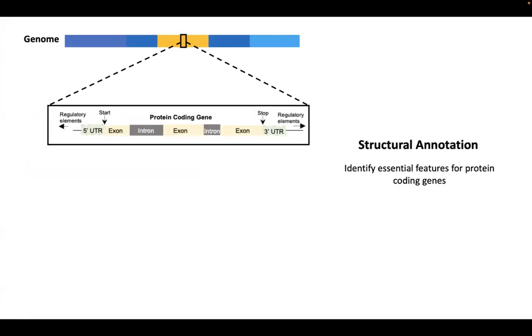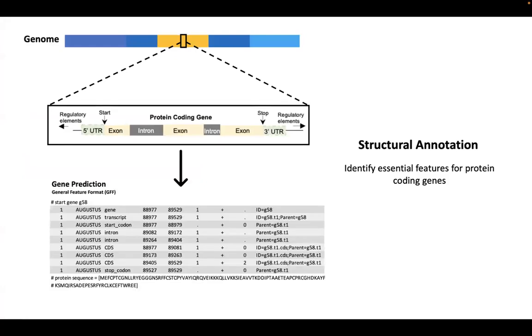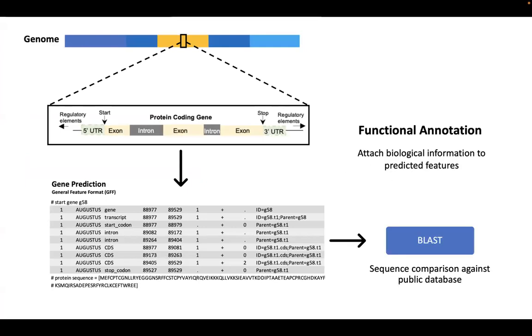Structural annotation helps create a blueprint for our genome. In other words, it's identifying essential features for protein-coding genes, which can be represented by this general feature format. Knowing the coordinates of each gene, you can then attach biological information with BLAST and publicly available databases. This is called functional annotation.